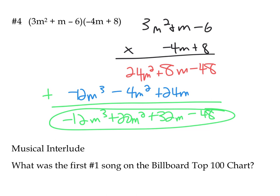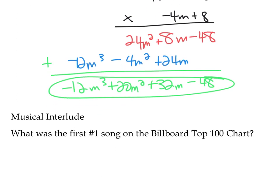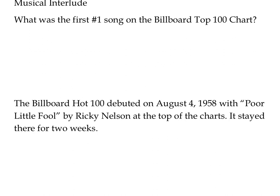A little break here — you might have seen this question at the bottom: the first number one song on the Billboard Hot 100 chart. The Billboard Hot 100 started tracking sheet music sales, then progressed to disc jockeys, jukeboxes, and eventually digital streaming. The first comprehensive list was compiled in 1958, and on August 4th the number one song was 'Poor Little Fool,' a doo-wop country rock song by Ricky Nelson, which stayed at the top of the charts for two weeks.